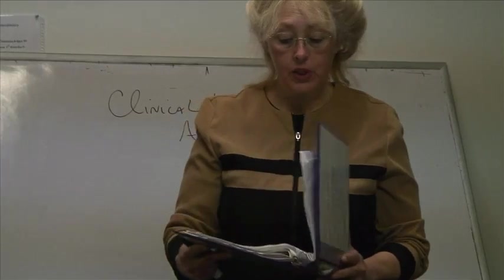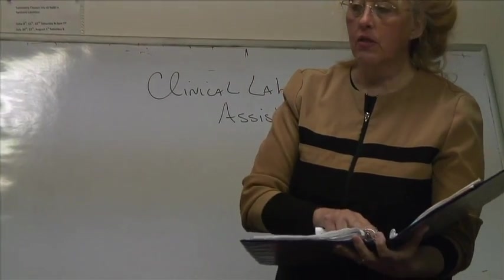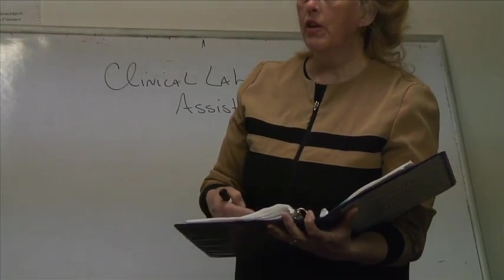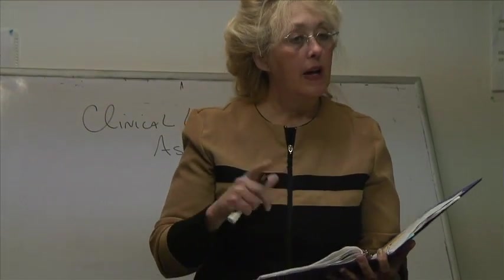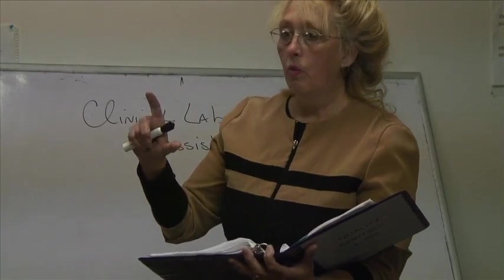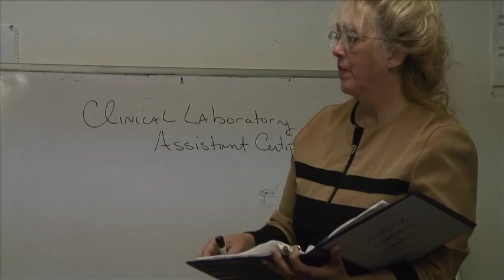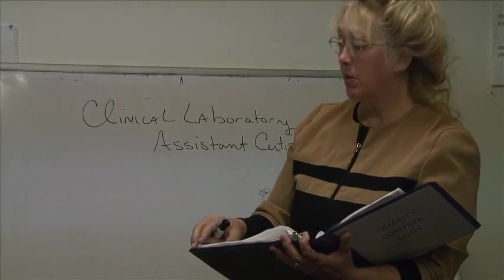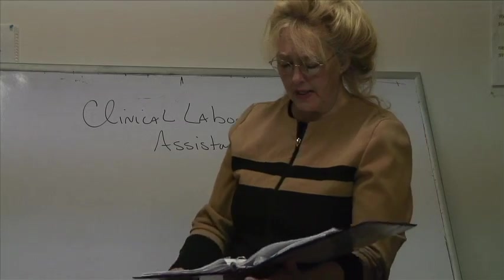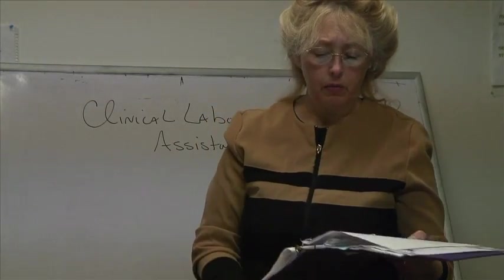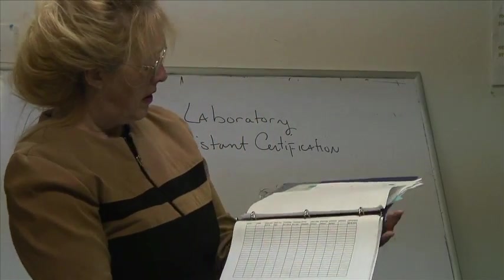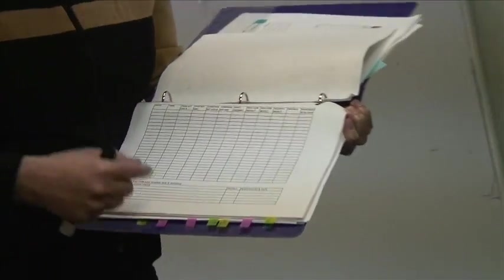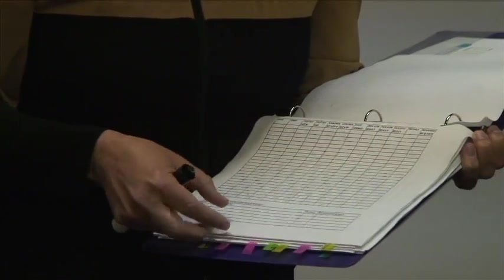A quality control log has a list of all lab tests and machines. Calibration requires using sample solutions with comparable analytes to blood or blood sugar — a high and a low — to ensure machines are working properly. When you do a test, you record the date, time, test name, lot number, expiration date, and control kit lot number, filled in on a daily or weekly basis.